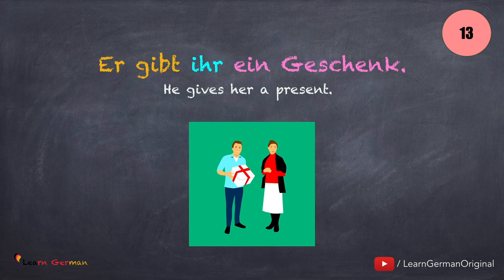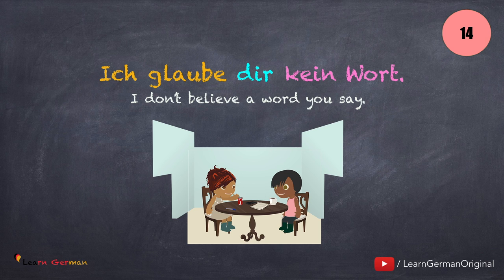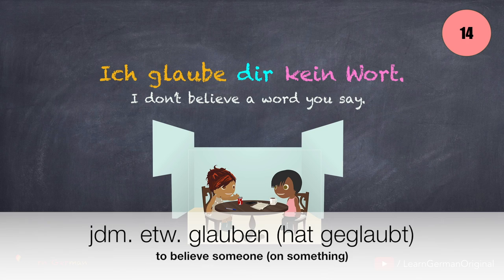With the next verb, the Dativobjekt is a must, whereas the Akkusativobjekt is optional: Ich glaube dir kein Wort. Jemandem etwas glauben oder nicht glauben.